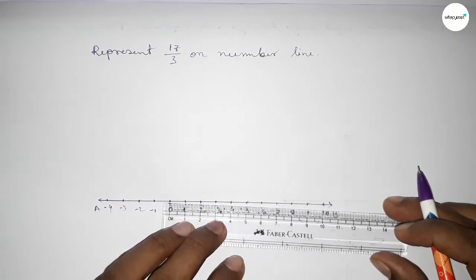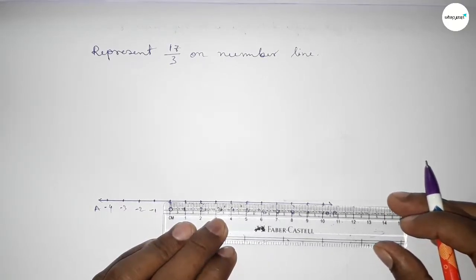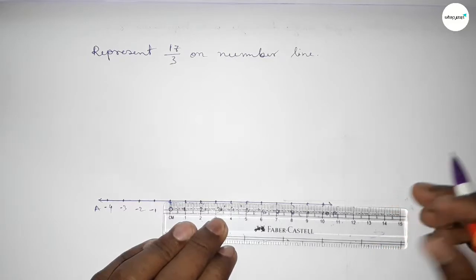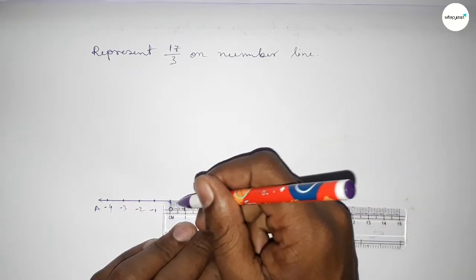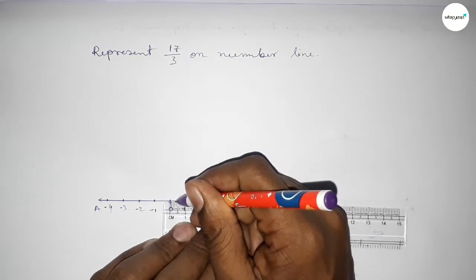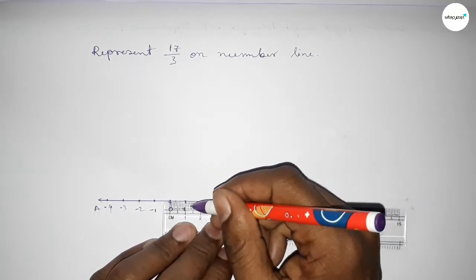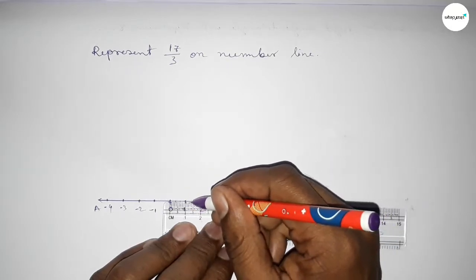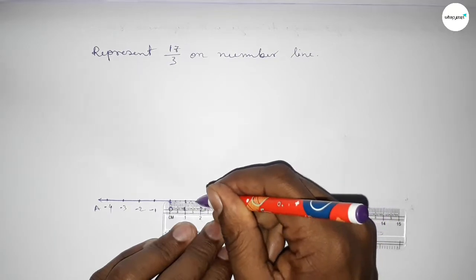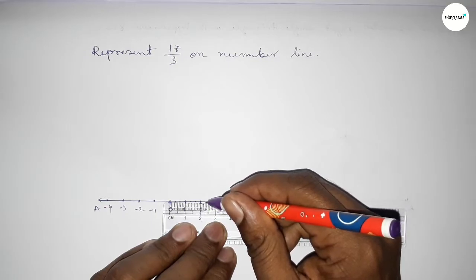First, dividing the distance between 0 to 1 into three parts approximately — this is 0.3 something approximately and this is 0.6 something approximately. Again dividing the distance between 1 to 2 — this is 0.3 something approximately and 0.6 something approximately.